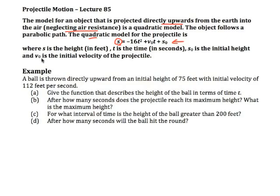The quadratic model is given by s equals negative 16t squared plus v₀t plus s₀. Where s is the height of the object, t is the time in seconds, and the height is in feet. s₀ is the initial height off the ground, and v₀ is the initial velocity of the projectile.